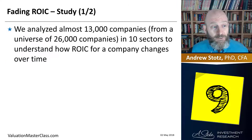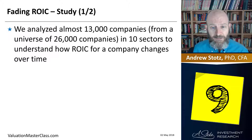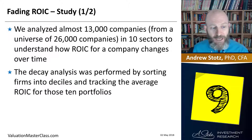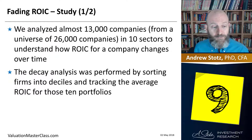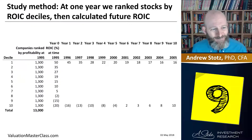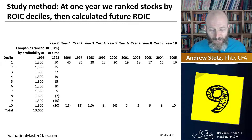Let's look at a study I'm going to present here. We analyzed 13,000 companies from a universe of 26,000 — 13,000 because those are the ones that had the data and were available at the time. We looked at 10 different sectors to understand how ROIC for a company changes over time. The decay analysis was performed by sorting firms into deciles and tracking the average ROIC for these 10 portfolios. Here is a table that shows you a hypothetical example to understand the structure of how we laid out this report.